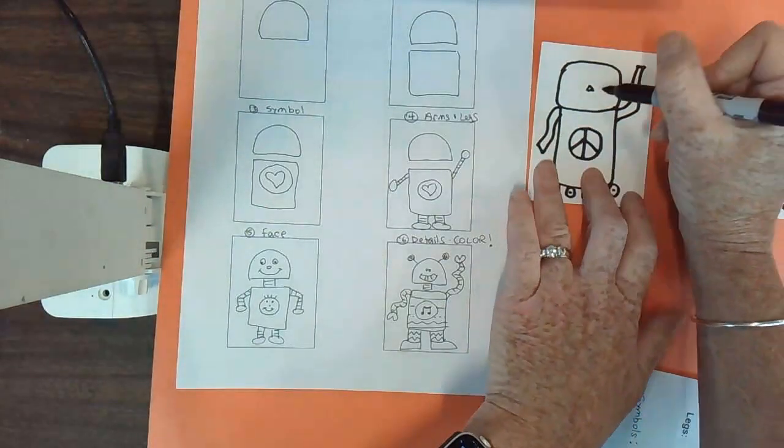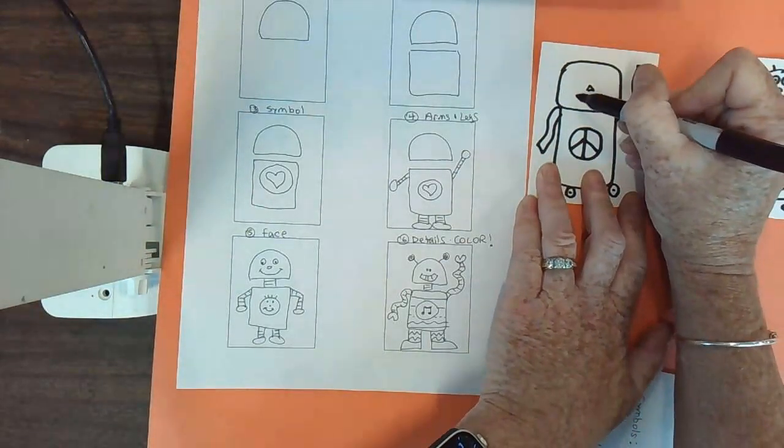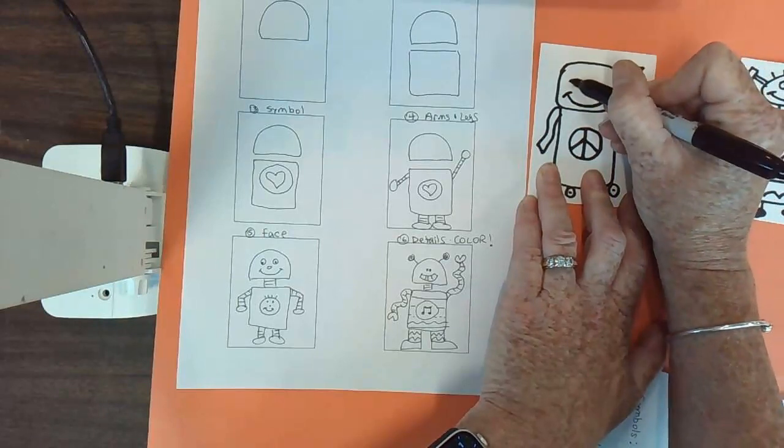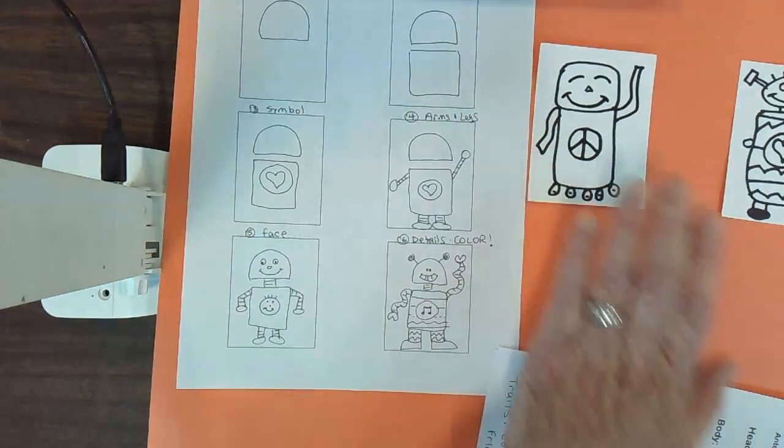You can add whatever kind of a face you like. I already have that little nose on there. I'm going to make him happy, kind of calm. Maybe I'll make his eyes sort of like this because he's peaceful.